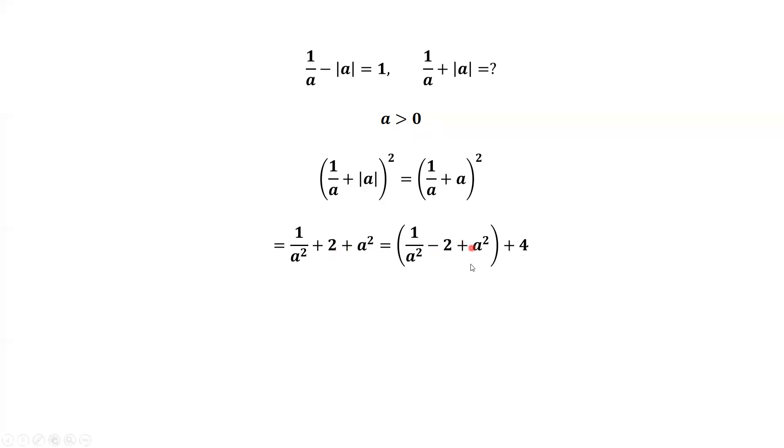We want to find a perfect square. This is 1 over a minus absolute value of a then squared.